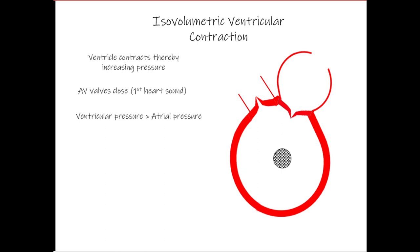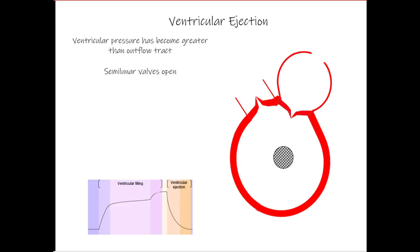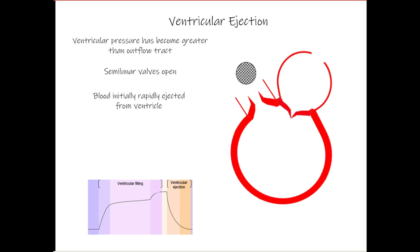With all valves closed, the aortic valve being closed tells us the pressure in the aorta is greater than the pressure in the ventricle. As we continue to contract the ventricle, ventricular pressure continues to increase until it eventually becomes greater than the pressure in the aorta. When that happens, the aortic valve opens and blood begins to be ejected, marking the beginning of ventricular ejection.